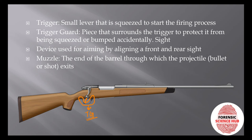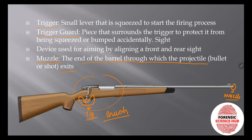Then comes the muzzle. The muzzle is the end of the barrel through which the projectile exits. The muzzle end is the last portion of the firearm that the bullet is in contact with. The opposite end is the breech end.